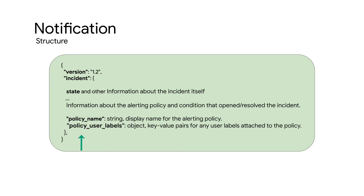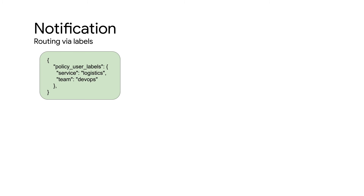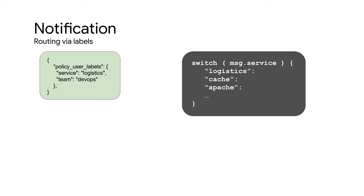You can use this data as parameters for your code. The policy user labels can be set on each alerting policy, so they are the most direct place to set parameters. For example, if each team owns a set of alerting policies, you can use the policy user labels to include data on which team should get the notification. Team and service could be used to select a chat room or channel in your notification service, where the people who will act on the notification are expecting it to land.